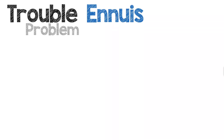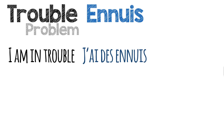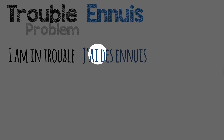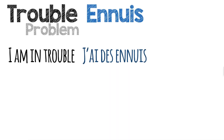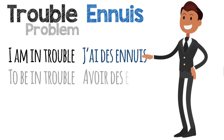We use the word 'ennui' in French. Ennui is masculine, and we use here the plural form: les ennuis, des ennuis. Of course, we could also use the word 'problème' in French. 'I'm in trouble' — J'ai des ennuis. As you can see, we use the verb avoir (to have), but in English it's the verb to be: 'I am in trouble' — J'ai des ennuis. So the infinitive form is 'to be in trouble' and in French, avoir des ennuis.